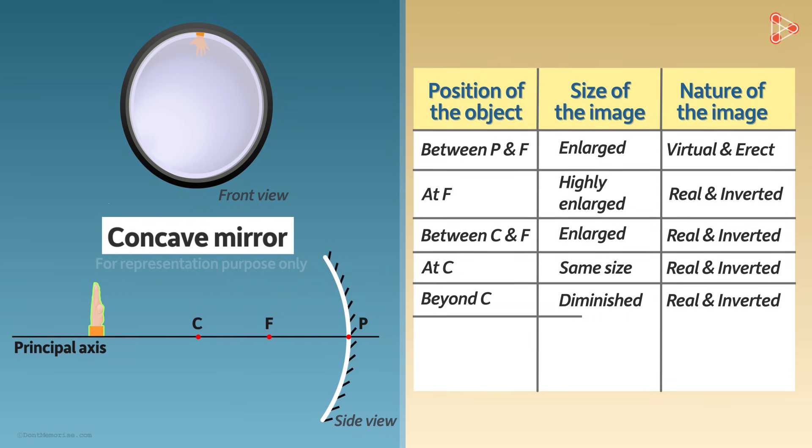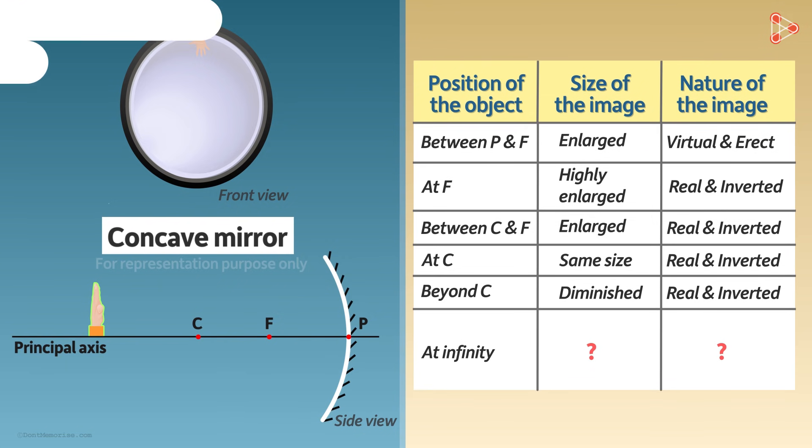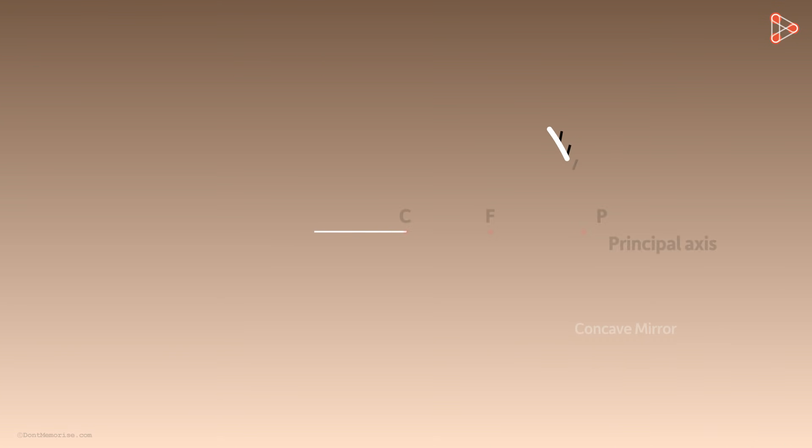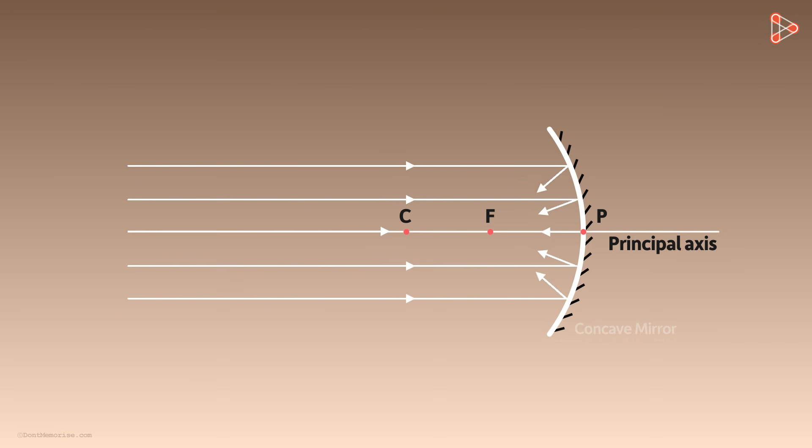What if the object is placed at infinity? Well, if you remember that in our previous video, we saw that the rays of light parallel to each other as well as to the principal axis will converge at the focal point. And in that example, our object was the Sun.